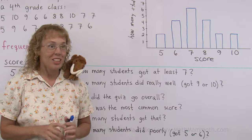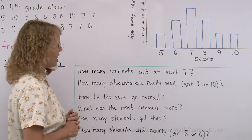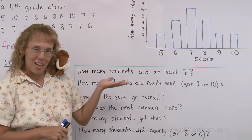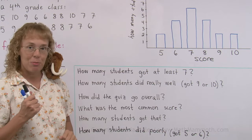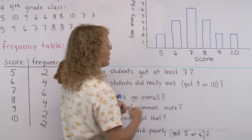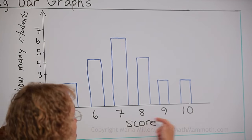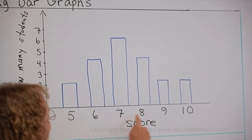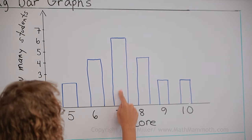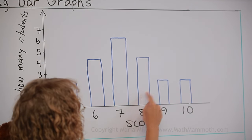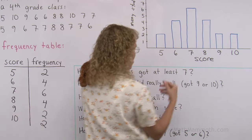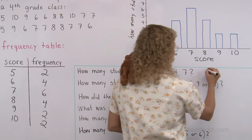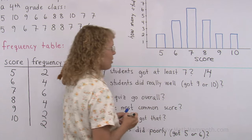Now lastly we're going to solve these questions here. They relate to the graph. How many students got at least seven? At least seven points. Okay, they got seven points or more. That's what it means. Seven, eight, nine, or ten points. So here we have six students. And four students. And two, and two. And you add those. So we get ten, fourteen. Fourteen students got at least seven on the quiz.